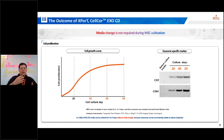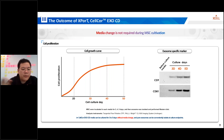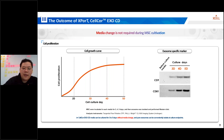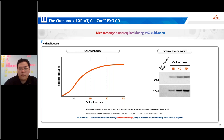Media changes during cell cultivation can be time-consuming and burdensome. However, CELCO XCD offers the advantage of not requiring media changes during MSC cultivation and exosome isolation. In this experiment, MSCs were incubated in different media formulations for three, four, and five days. Exosomes were isolated and analyzed using Western blotting. The results indicate that CELCO XCD can be cultured for three to five days without the need for media changes, and the culture media doesn't contain any contaminants, simplifying the workflow and facilitating the isolation of pure exosomes at the desired culture endpoint.